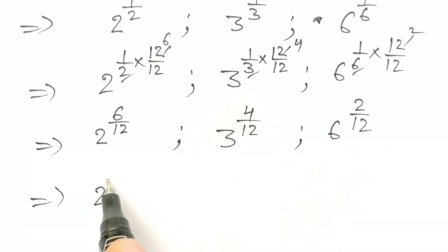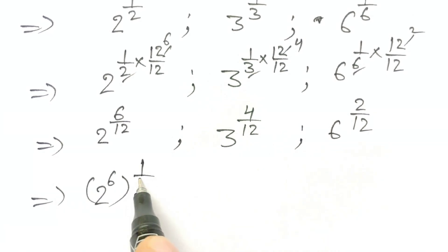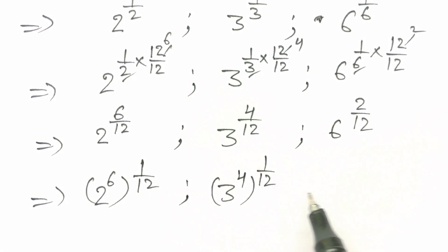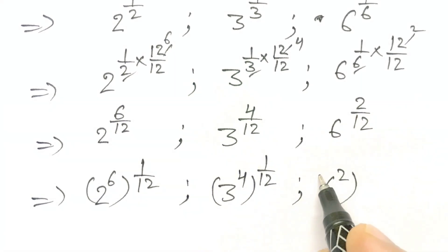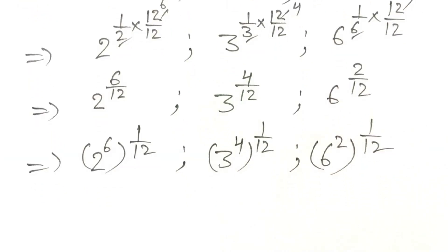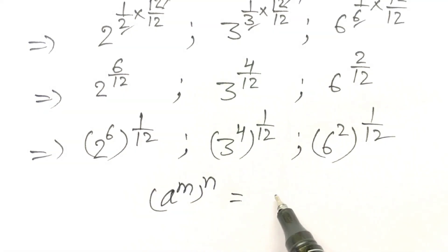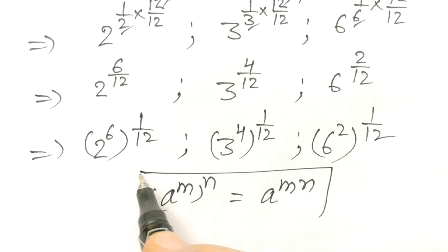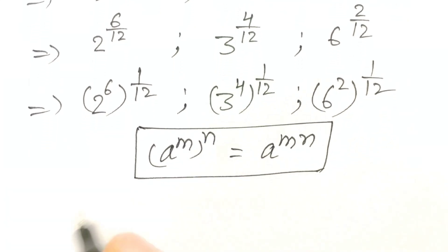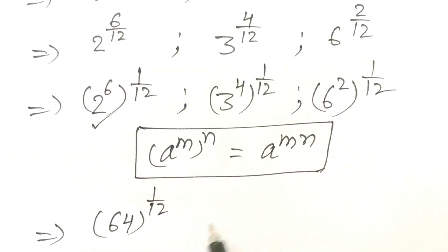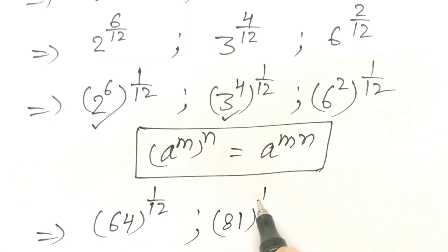We can write these as 2 to the power 6, all to the power 1 over 12; 3 to the power 4, all to the power 1 over 12; and 6 squared, all to the power 1 over 12. As we know, a to the power m to the power n equals a to the power m times n. So 2 to the power 6 is 64 to the power 1 by 12, and 3 to the power 4 is 81 to the power 1 by 12, and 6 squared is 36 to the power 1 by 12.